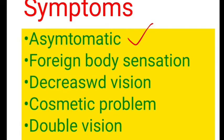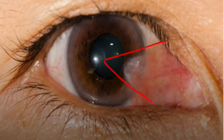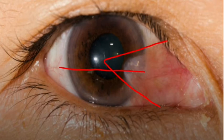Moving on to symptoms: most of the time pterygium is asymptomatic. Sometimes patients report foreign body sensation, grittiness, or dryness. There can also be decreased vision — one obvious mechanism is when the pterygium approaches the pupillary area, blocking the visual axis. The second mechanism is compression of the cornea, leading to flattening of that meridian and causing astigmatism, which results in diminished vision.